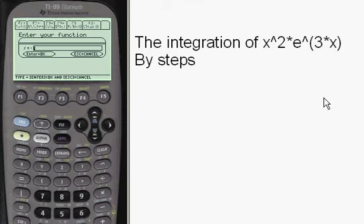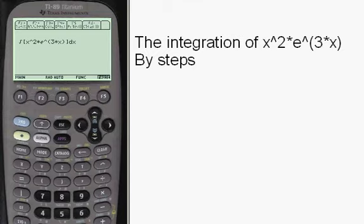And we're going to enter the function in here. You press alpha first. Alpha x squared times e to the 3 times x. Close off the parentheses. Let's see if we did it right. Looks pretty good. We're going to say it's okay.